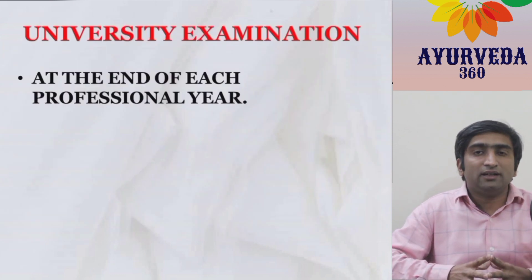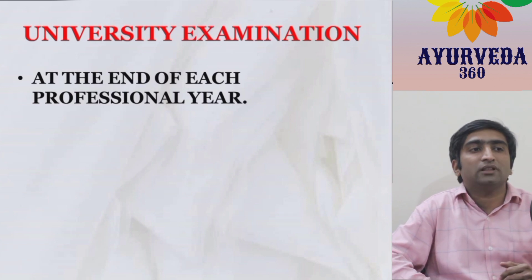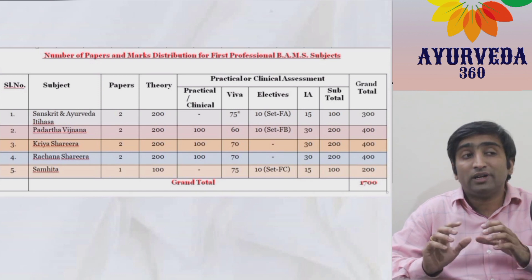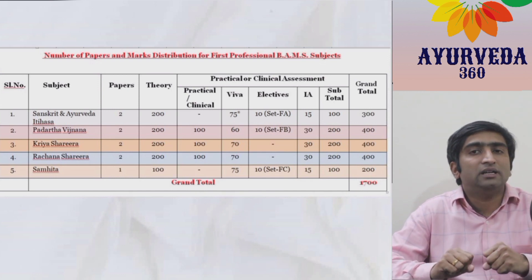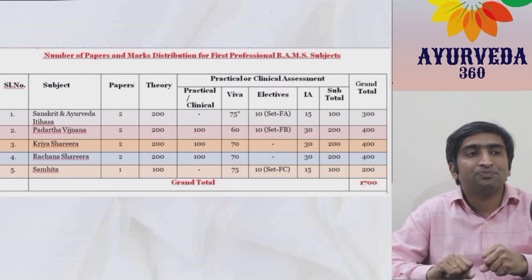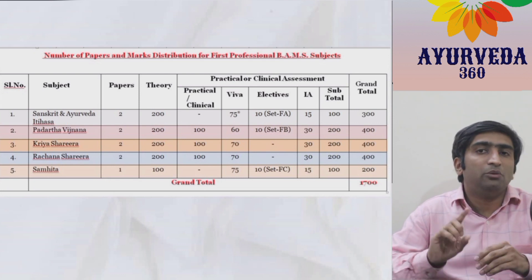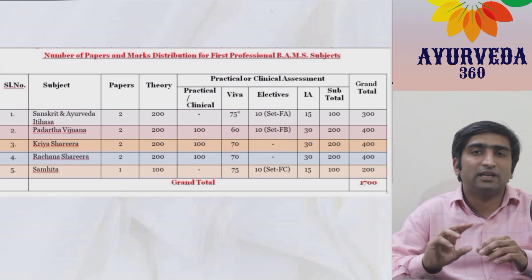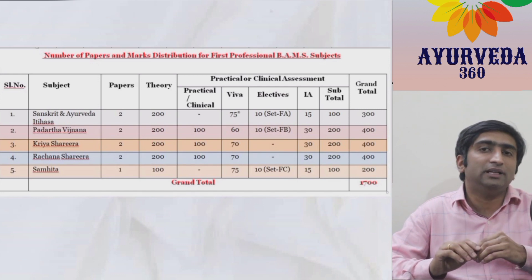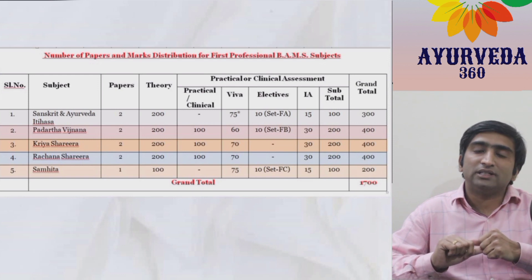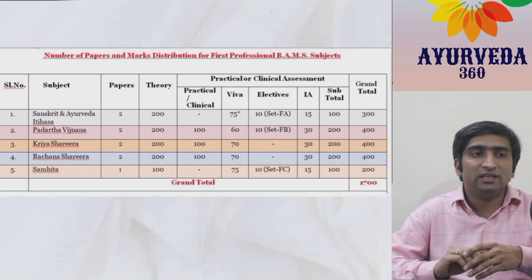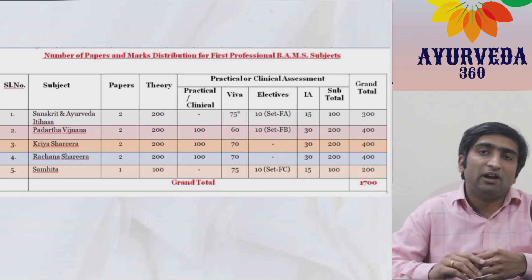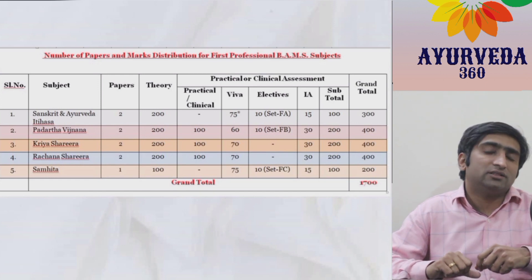Before the university examination is conducted, the student's internal assessment marks are sent to the university. At the end of each professional BAMS, there will be a theory exam followed by a practical. In the first professional BAMS, five subjects are included — among them, Samhita Adhyayana has one paper (100 marks), while the rest have two papers each. There will also be practical assessment — some subjects have simple practicals, some have clinical assessment in front of patients, and all subjects will have viva voce. This is a major change in the new regulation.